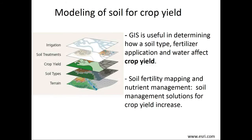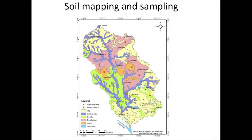The modeling of soil for crop yield is a major application of GIS. For example, you can use GIS to determine how soil type, fertilizer application and water tend to affect crop yield. You can see multiple layers in this particular system. This is slowly becoming a major activity, namely soil fertility mapping and nutrient management. This can become an important solution for crop yield databases, as more and more countries are worried about increasing costs of fertilizers as inputs into agriculture.